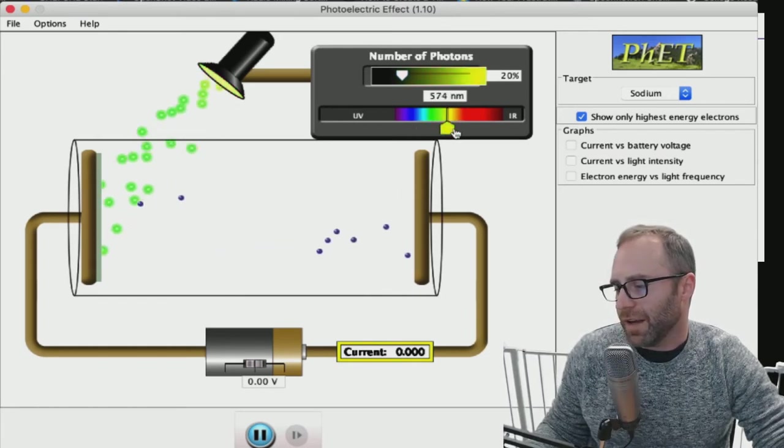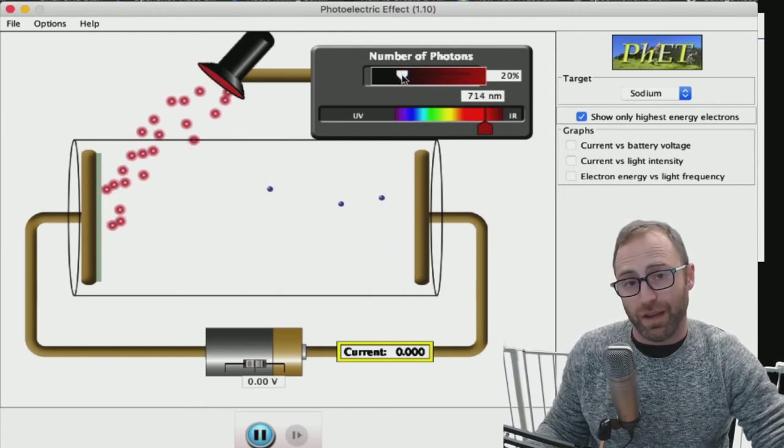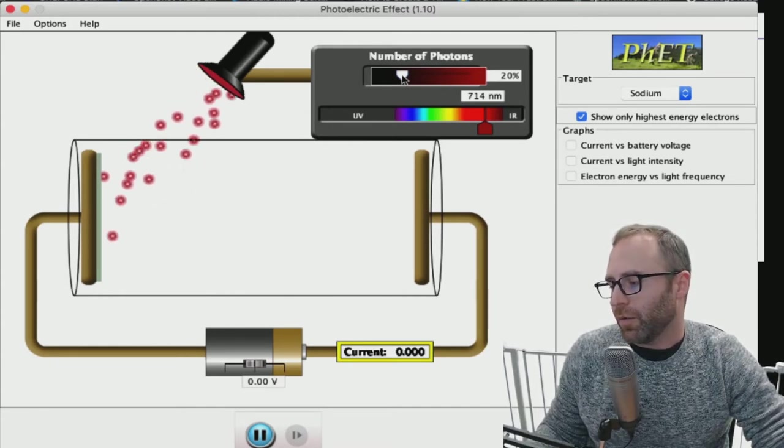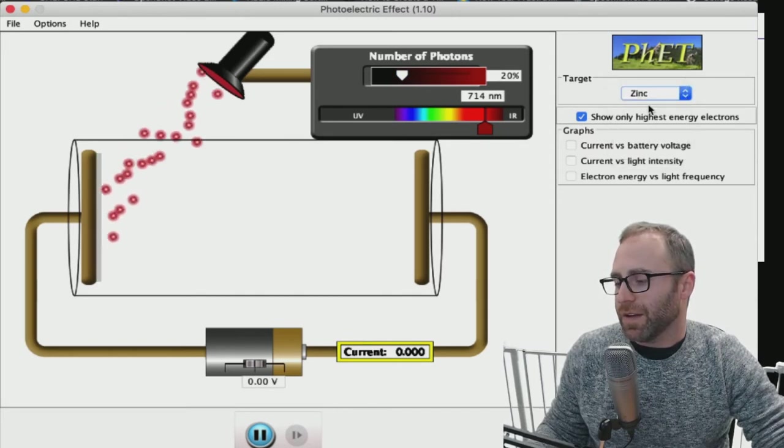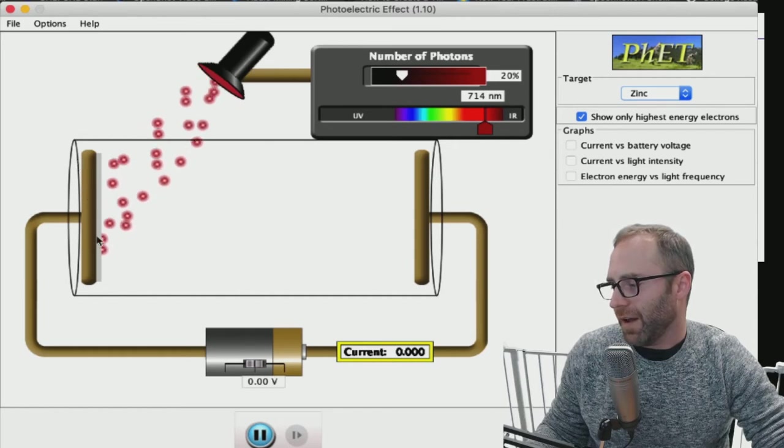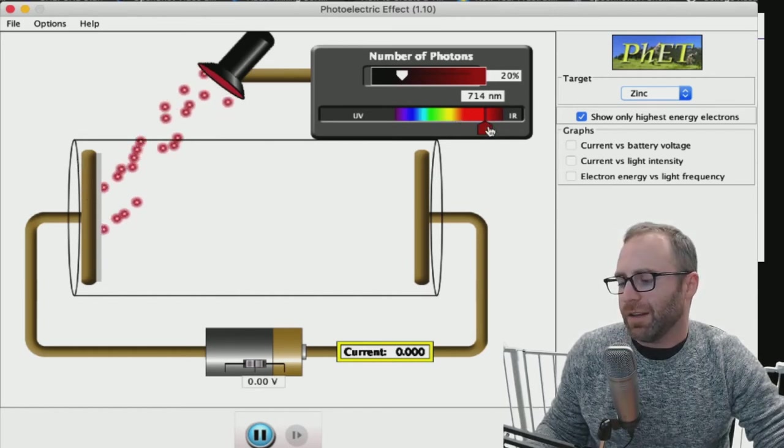I'm gonna scale it back down here I'm gonna turn our photons off and notice when we scale it back down to that longer wavelength the electrons stop flowing. Let's change our metal to something like zinc. So the simulation now has our piece of metal over here being zinc instead of sodium and let's do the same thing here.